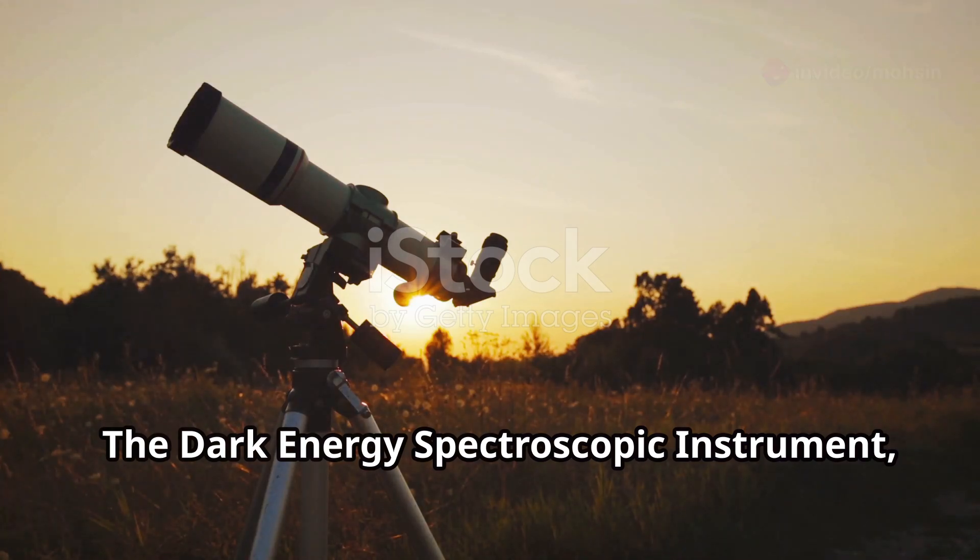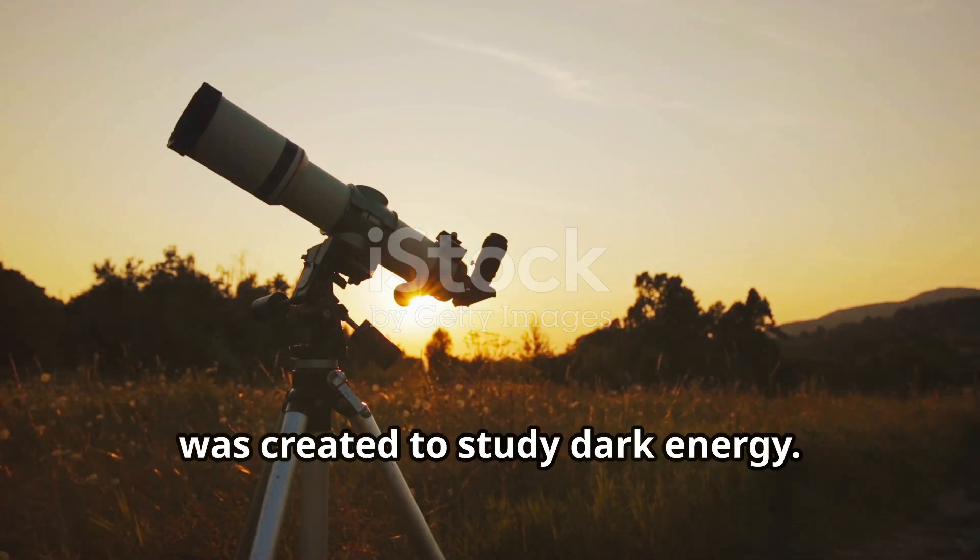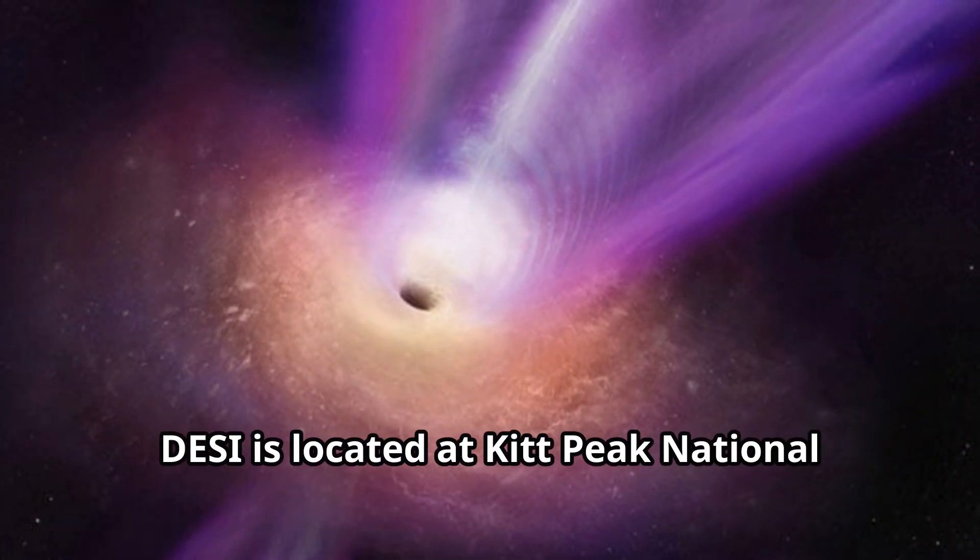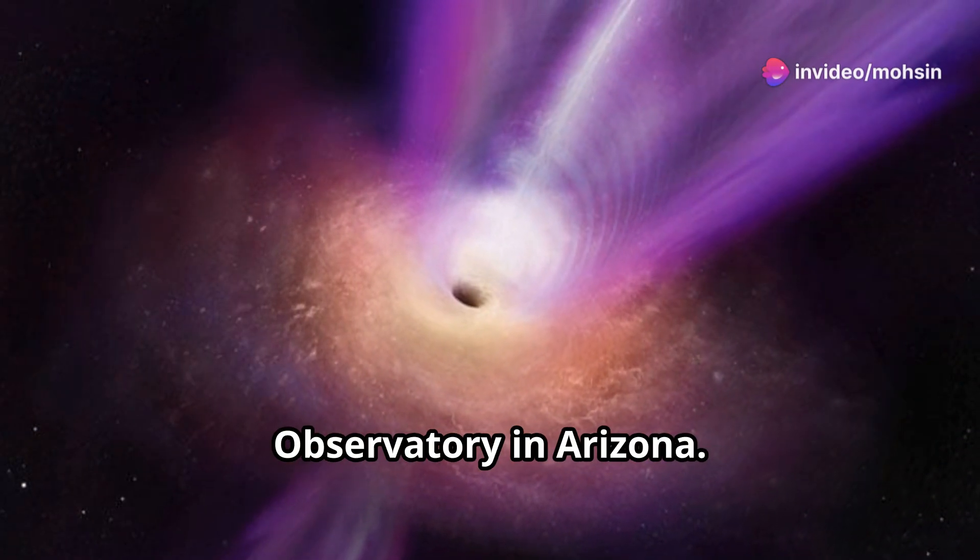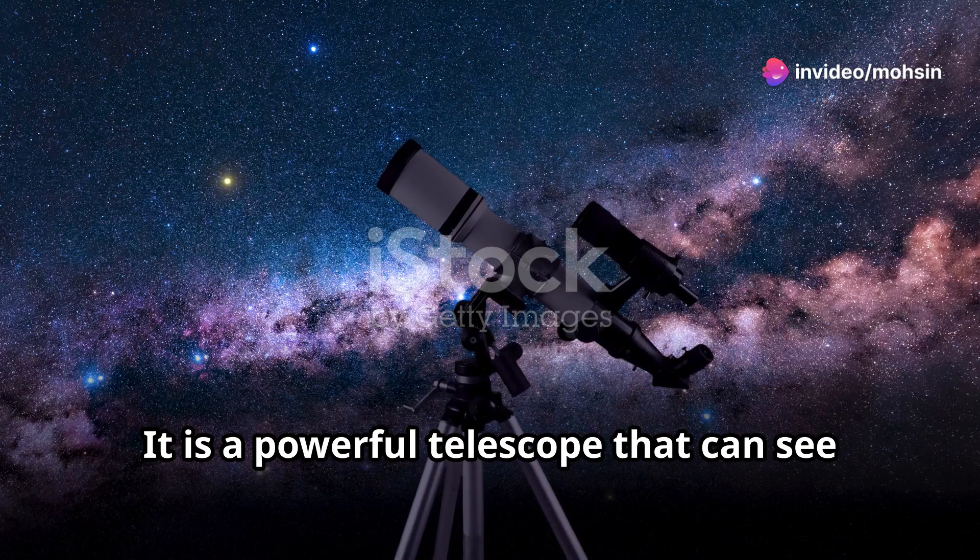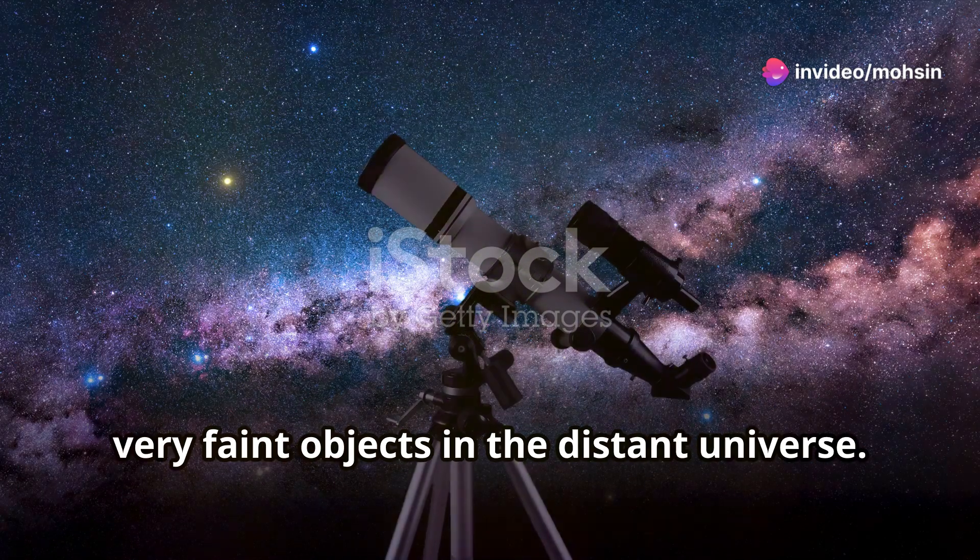The Dark Energy Spectroscopic Instrument, or DESI, was created to study dark energy. DESI is located at Kitt Peak National Observatory in Arizona. It is a powerful telescope that can see very faint objects in the distant universe.